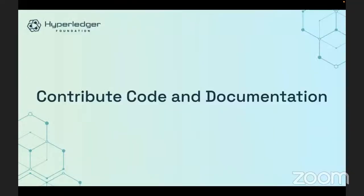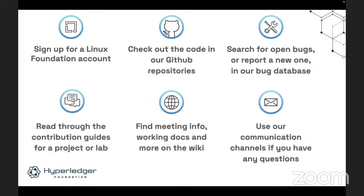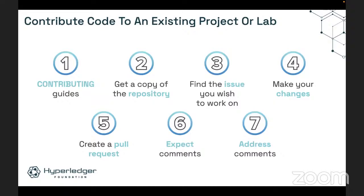Once you're familiar with the community and understand what you want to do, here are a few words about how to contribute code and documentation. First, sign up for a free Linux Foundation account, which will give you access to all the tools we use in the community. Then you can check out our code, check out our bug database, submit bugs, read through our documentation, and contribute to our wiki. For the exact steps to contribute code to an existing project, each project and lab is a little different, but step one in all cases is to check out the contributing guide. Each project and lab has information about the steps you can take to contribute.